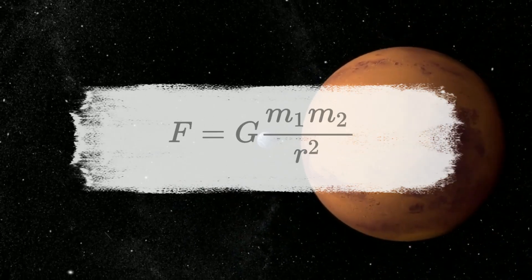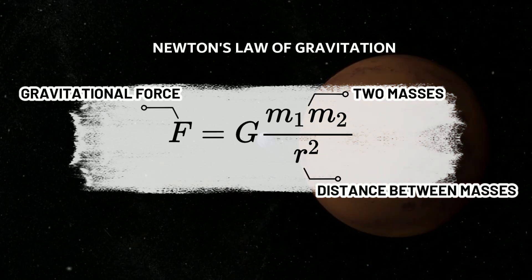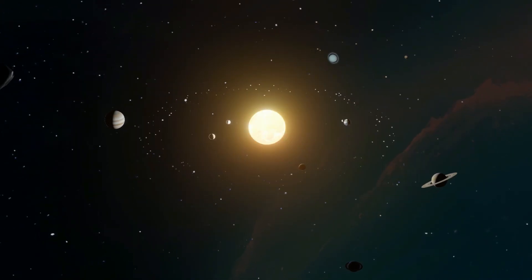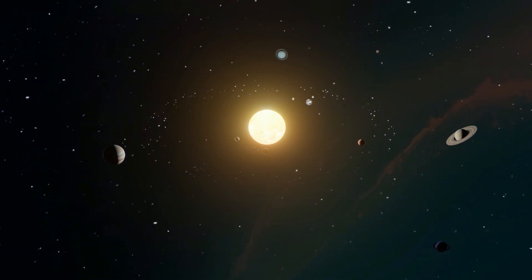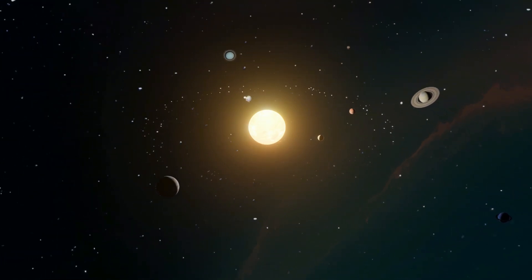At number nine we have Newton's Law of Gravitation. This law was also given by Sir Isaac Newton and it essentially explains how bodies attract one another due to gravitational forces. This force is very small in our day-to-day life, but at intergalactic scales and when masses of planets are involved, this force becomes very powerful.